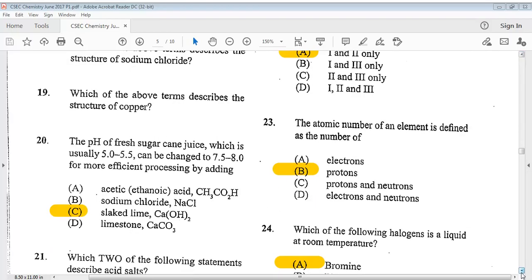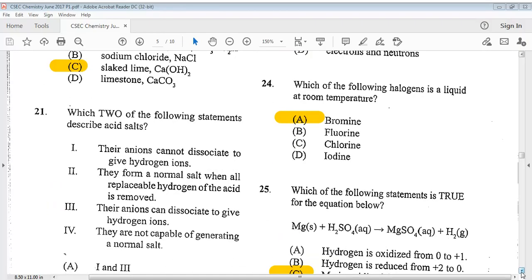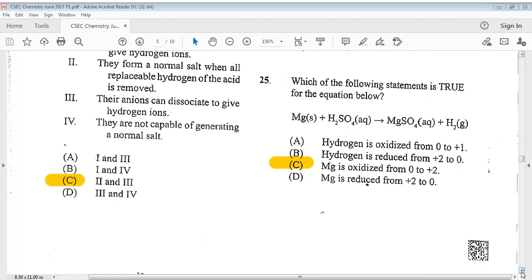Let's go on to question 20. It says the pH of fresh sugarcane juice, which is usually 5.0 to 5.5, can be changed to 7.5 to 8.0 for more efficient processing by adding? The answer is C. Let's go on to number 21. Which two of the following statements describe acid salts? 1, their anions cannot dissociate to give hydrogen ions. 2, they form a normal salt when all replaceable hydrogen of the acid is removed. 3, their anions can dissociate to give hydrogen ions. 4, they are not capable of generating a normal salt. The answer is C, 2 and 3.